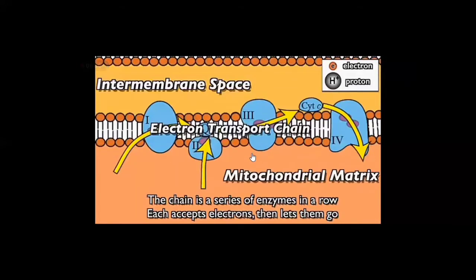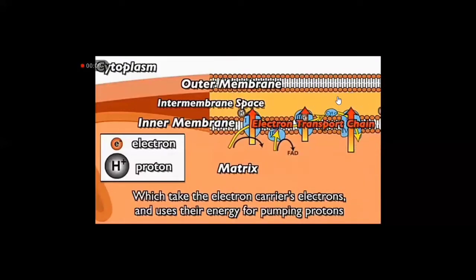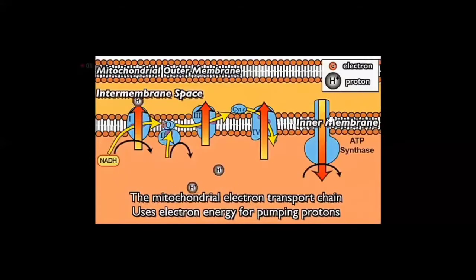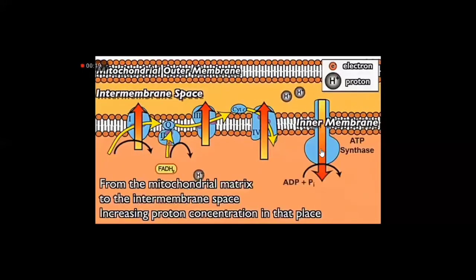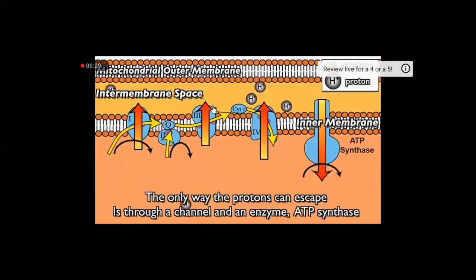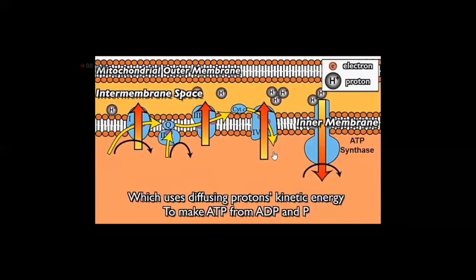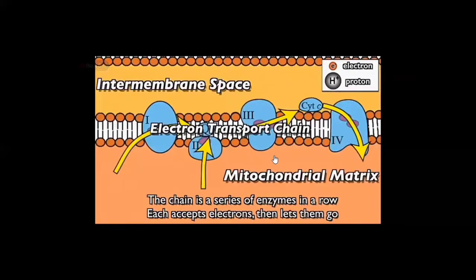The hydrogen ions accumulate in the intermembrane space. These hydrogen ions are then taken up from inside the matrix through ATP synthase. These hydrogen ions re-enter the matrix via ATP synthase. Together with oxygen, water molecules are formed in this synthesis process.